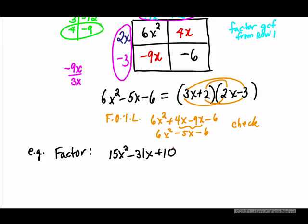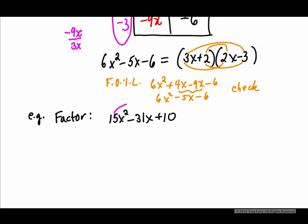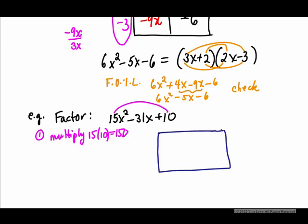Our first step, it's this AC method, is we're going to multiply 15 times 10, which is 150. If I set up the table for the tic-tac-toe, you will see this very nicely. Because in your table, the first term you put is 15x², and then we have 10. So automatically, we see 15 times 10 is 150.